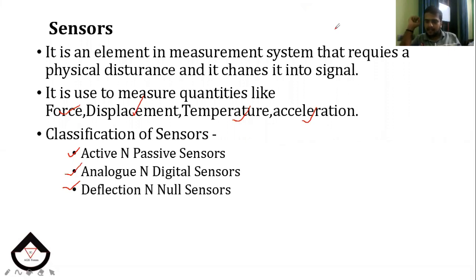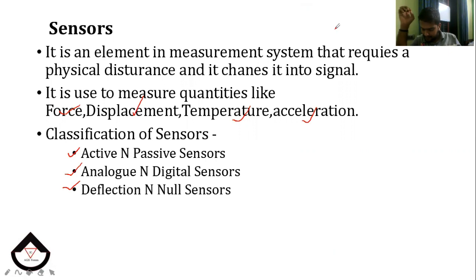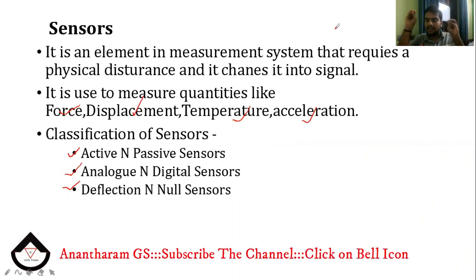Active and passive sensors. The definition of active sensor: it requires an external source of power or excitation voltage that provides the majority of the output power of the signal. For passive sensors, the output power is almost entirely provided by the measured signal without any excitation voltage. So, active sensors have external power; passive sensors do not have external power.